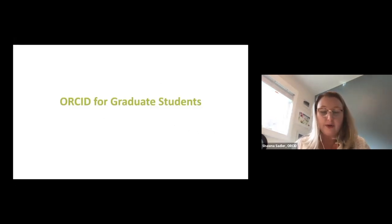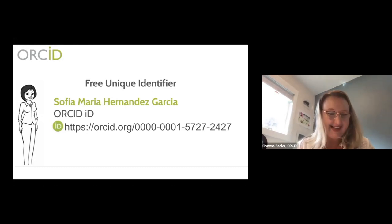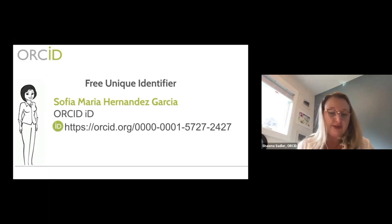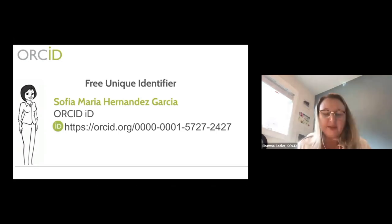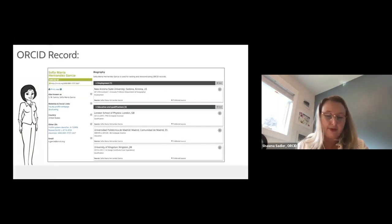To demonstrate how ORCID works for grad students and researchers, we have Sofia Maria Hernandez-Garcia as an example. Please imagine Sofia as a grad student at your organization. Sofia went to ORCID.org, clicked the sign-in and register link, and spent approximately a minute registering for an ORCID ID — the 16-digit number you see on the screen ending in 2427. This number is unique to Sofia, and she was assigned a record to capture her research activities.